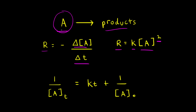Going back to our hypothetical reaction where reactant A turned into products, there was a one as a coefficient in front of A, and we can use that form of the integrated rate law for a second order reaction. However, for our problem, we have a two as a coefficient in front of cyclopentadiene, and that means we need a stoichiometric coefficient of one half in here, and that changes the math.